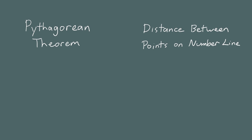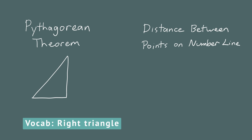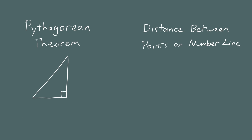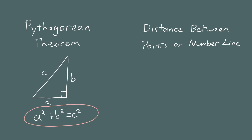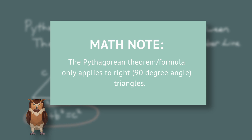Let's do a quick review. The Pythagorean theorem says that if you have a right triangle — a triangle with a 90-degree angle — and the lengths of the three sides are a, b, and c, then the relationship is a squared plus b squared equals c squared. This formula only works for right triangles; it does not work for acute triangles or obtuse triangles.